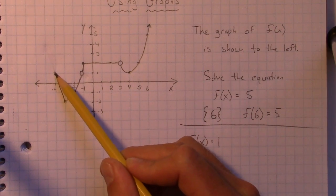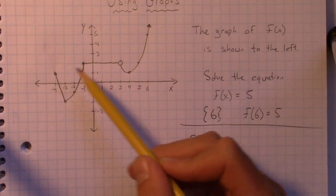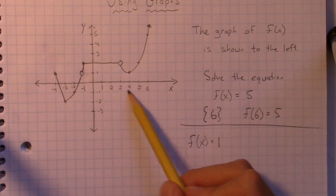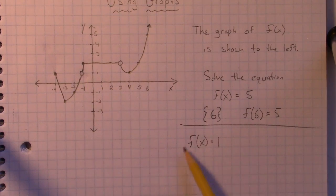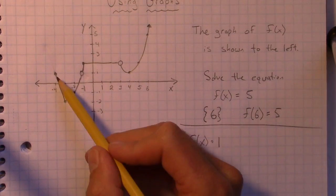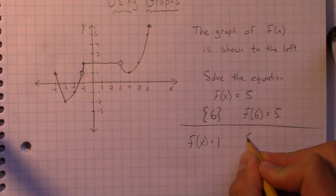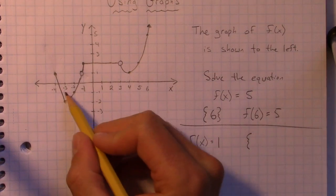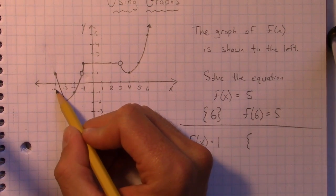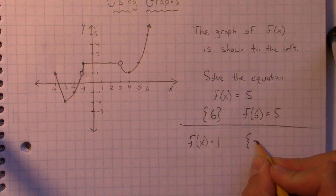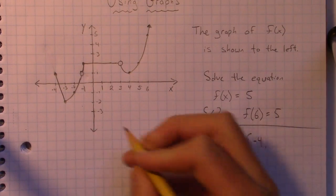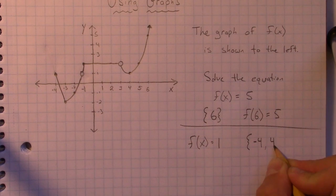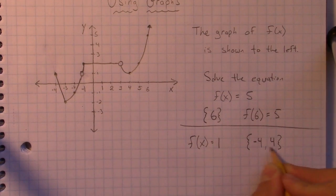But here there's an x value that corresponds to an output of 1. And also here, if you look all the way across the horizontal line at y equals 1, or f(x) equals 1, I should say, you have two different spots. So now we have a set that is more than one number, which is why these brackets are helpful here. We can put more than one number. So we have negative 4 is one number that would give us an output of 1 and it looks like positive 4, right?